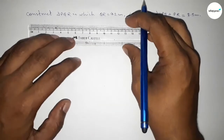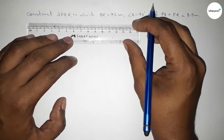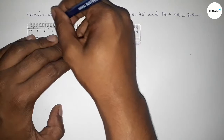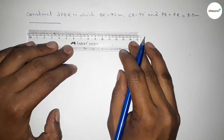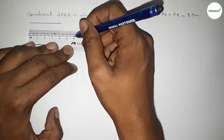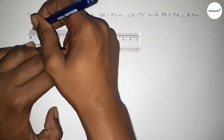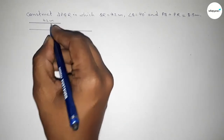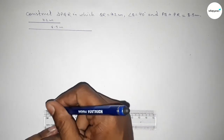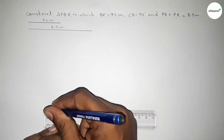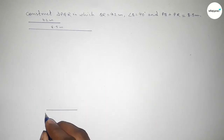Let's start. First, drawing a line of length 4.2 centimeters, then drawing another line of length 8.5 centimeters. So this one is 4.2 centimeters and this one is 8.5 centimeters. Now again we draw a line of length 4.2 centimeters.